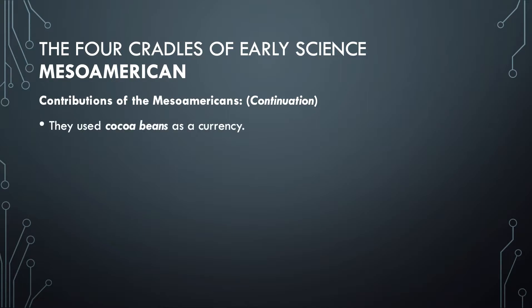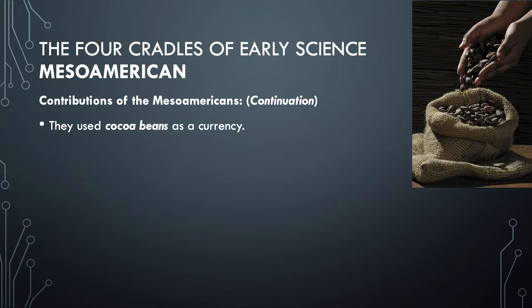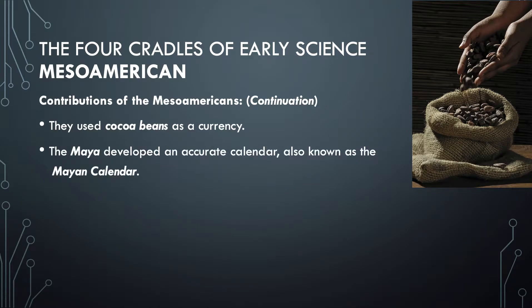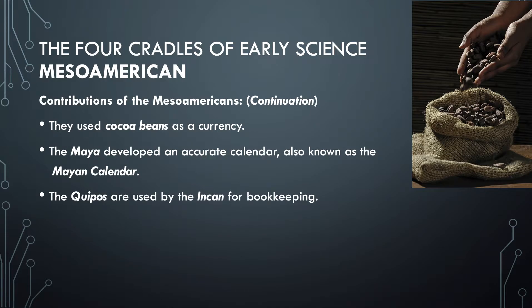The Mayans used cocoa beans as their currency — cocoa beans which we now use in the production of chocolate. The Maya also developed an accurate calendar known as the Mayan calendar. The kipus, or quipus, were used by the Incas for bookkeeping.